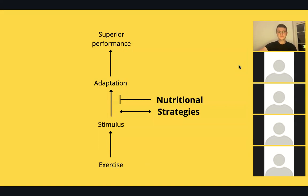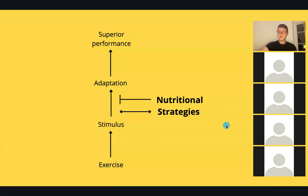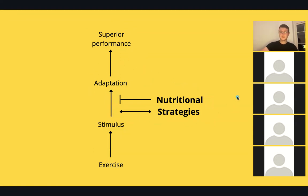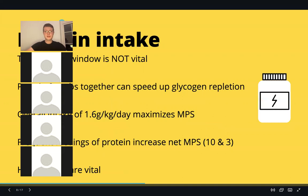Where does nutrition strategy fit? Exercise gives you the stimulus, and depending on what you do in recovery, that will either give you or prevent adaptation. That adaptation happens when you sleep and rebuild tissue - those physical, neural, and biochemical changes lead to superior performance. It all depends on how you eat and behave between stimulus and adaptation. Outside of food, timing, medications, and supplements can all affect what happens at a cellular level.